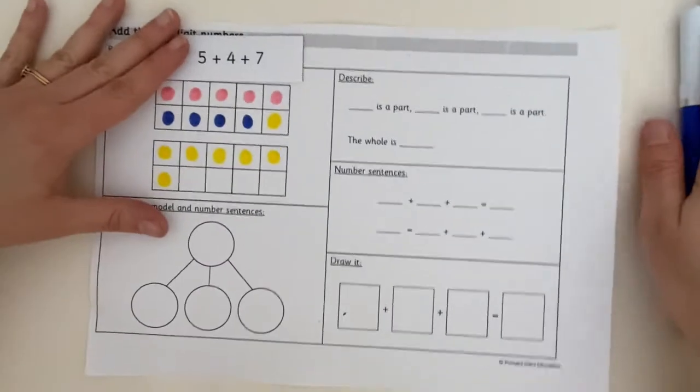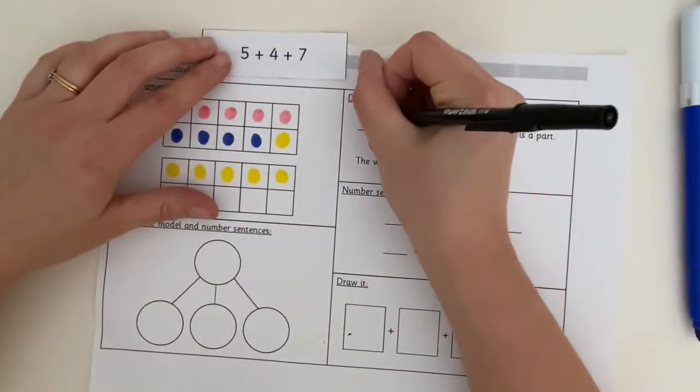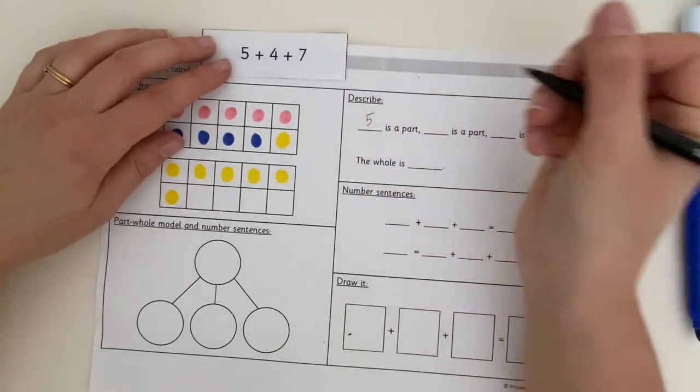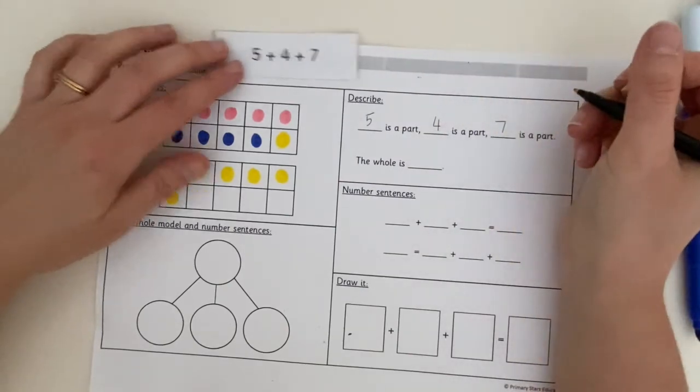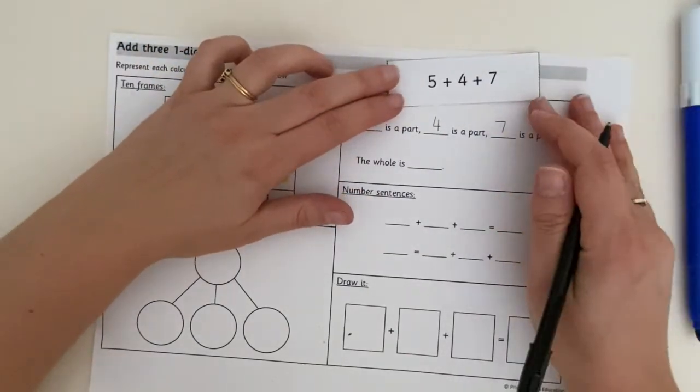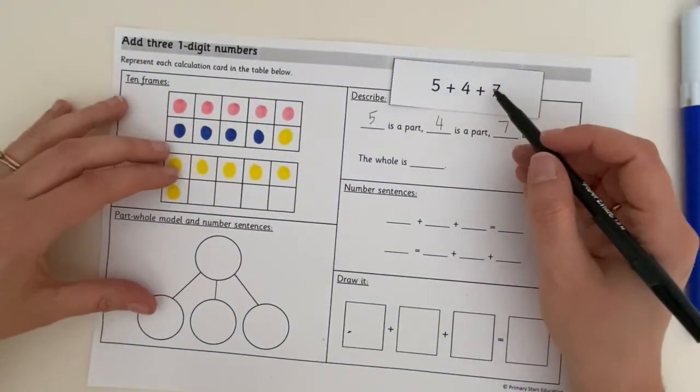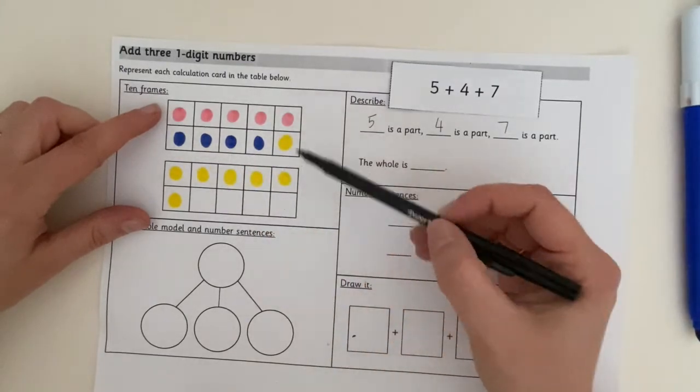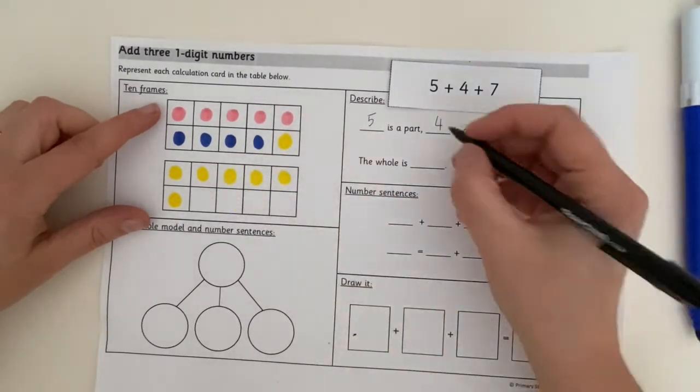Let's have a look now at the other parts of this sheet. We know that this number, five is a part, four is a part and seven is a part. That bit is really easy. That's on here for us. Now the whole is, that's the whole number, that's the answer. Now, do you remember, we looked here, we've got 10. We know that this is five and one more. So we know it's going to be 16.